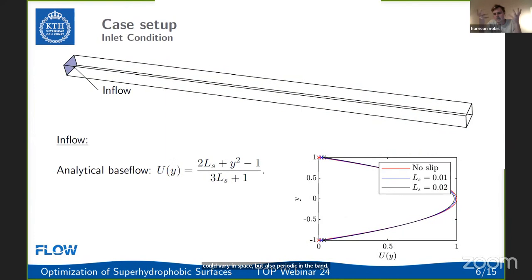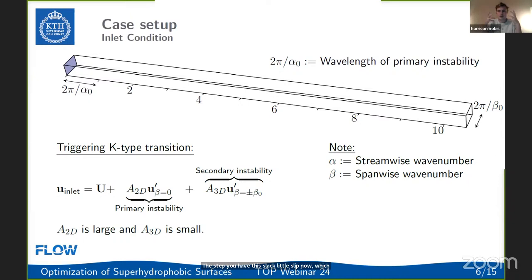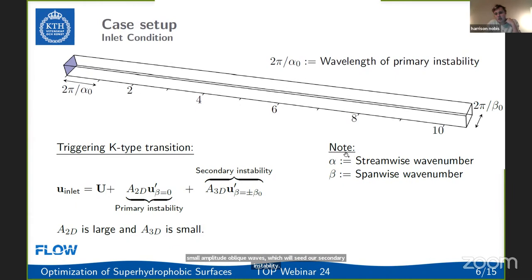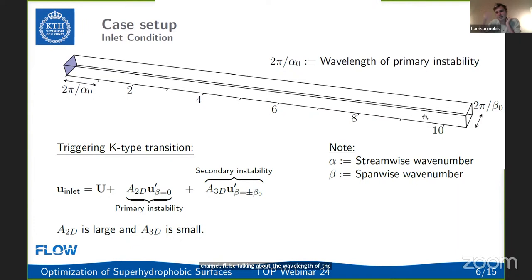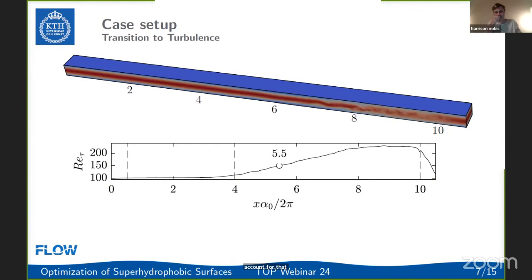The boundary condition has zero velocity in the normal direction, and projected onto the tangent plane, the same Robin condition applies where slip length varies in space. We trigger K-type transition by superimposing at the inlet a relatively large amplitude 2D primary disturbance — a Tollmien-Schlichting (TS) wave — and two relatively small amplitude oblique waves that seed the secondary instability. Streamwise and spanwise wave numbers are denoted alpha and beta; the channel is 10 wavelengths long plus an extra half-wavelength for the sponge.